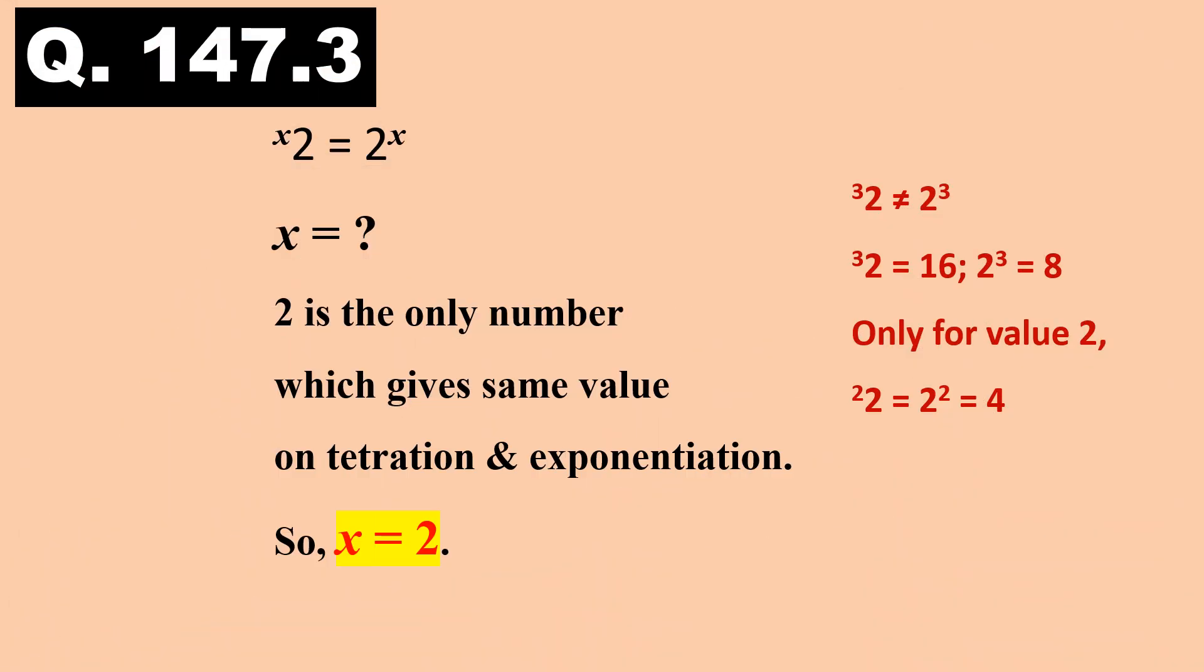Answer to question 147.3. With base 2, we can see that superscript 2 is the only number for which tetration is equal to exponentiation. With superscript 3, tetration gives 16 while exponentiation gives 8. Only when superscript is 2, base 2 will give 4 for both tetration and exponentiation. So, x is equal to 2.